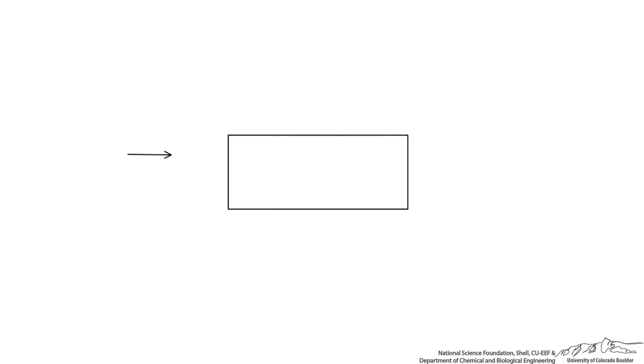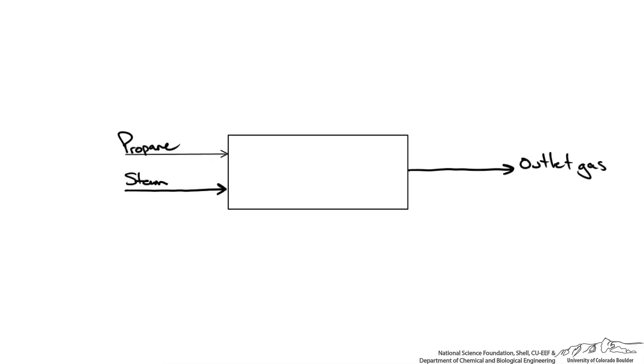The first part of approaching this problem is to draw a schematic of the process. We don't need to know what type of reactor is used, so we represent the reactor as a single box. We have a process stream of propane entering, steam entering with the propane, and an outlet gas composition leaving. Coming around the reactor from the top is our heating gas.